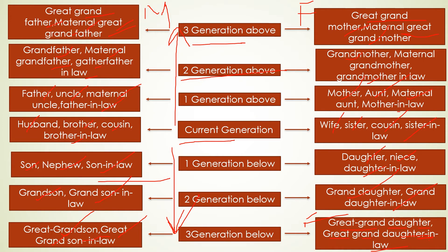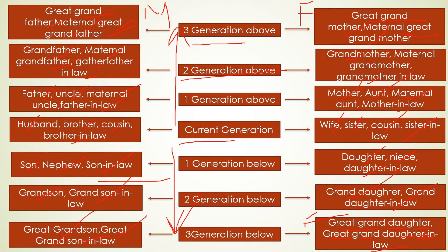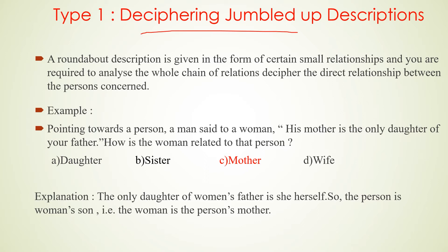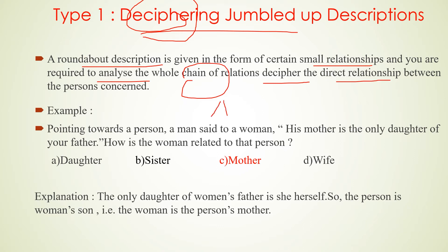It is extremely important to understand the generation chart. If you have a generation gap, you will need to solve the problem in relationship questions. There are different types: Type 1 is deciphering a jumbled-up description — you need to decode the relationship. You compare the problems with relation, analyze the relationship, and then solve it. For example: A is related to B, and B is related to C.